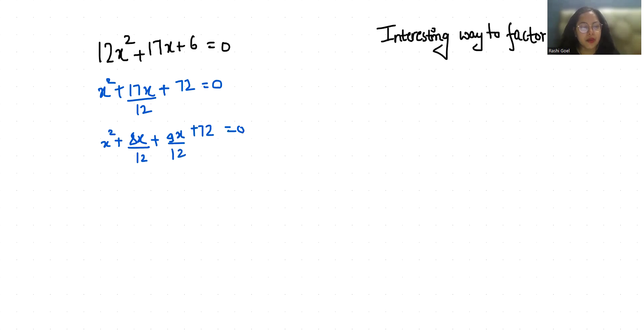Now x is common, so x plus 8 by 12, and if 9 by 12 is common, so x plus 8 by 12. Now x plus 8 by 12 is common, so x plus 9 by 12 equals zero.